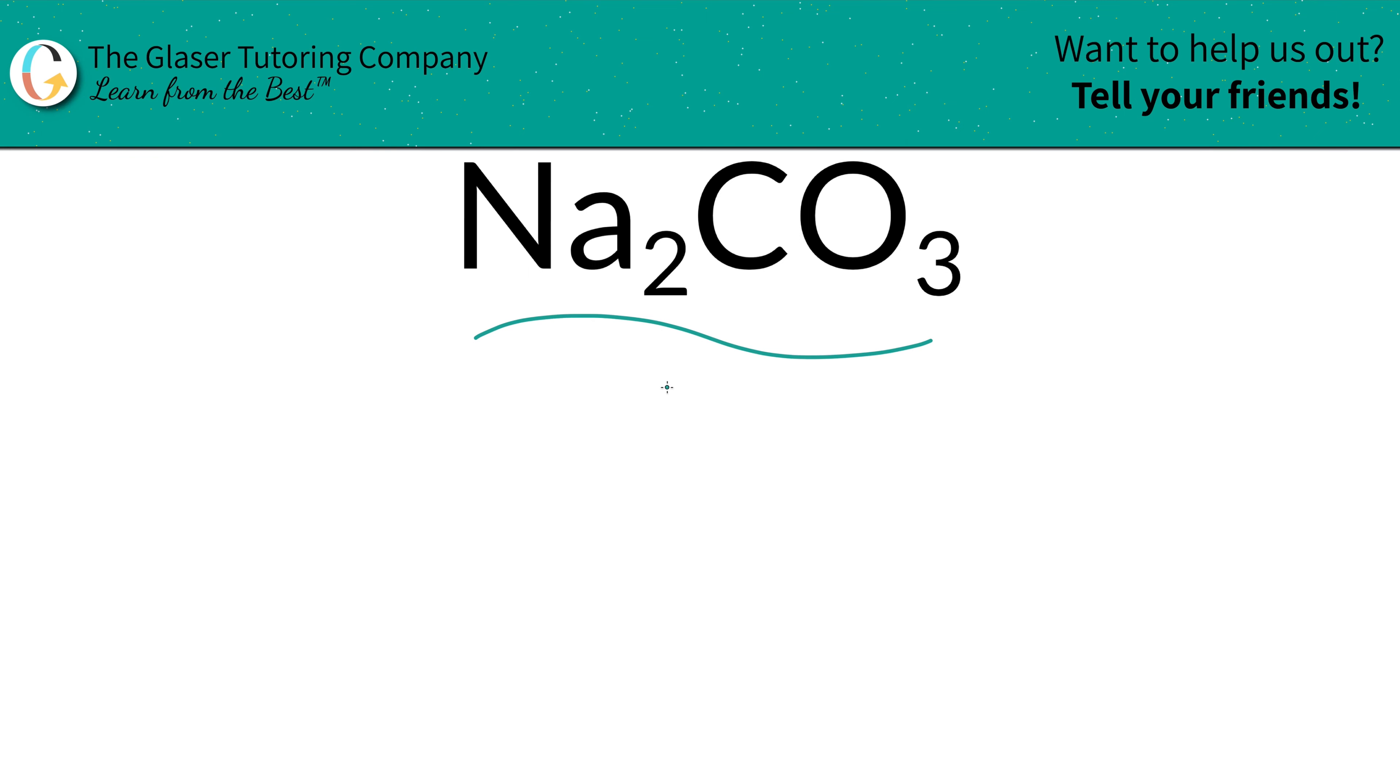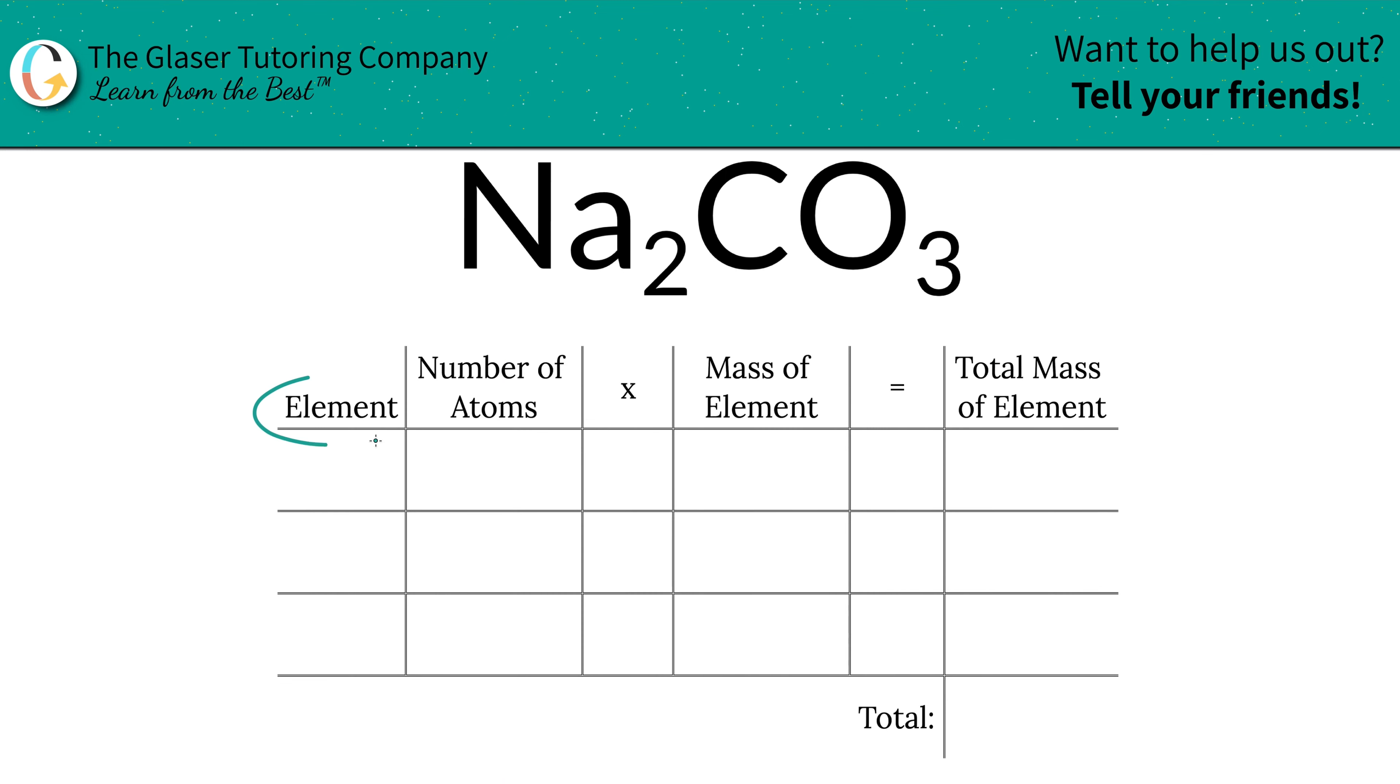In order to do so, we're going to find the mass first, and I have a nice little table to help us out. Here we go. So the first thing is to write the elements down that we see. So we got sodium, we got carbon, we got oxygen.